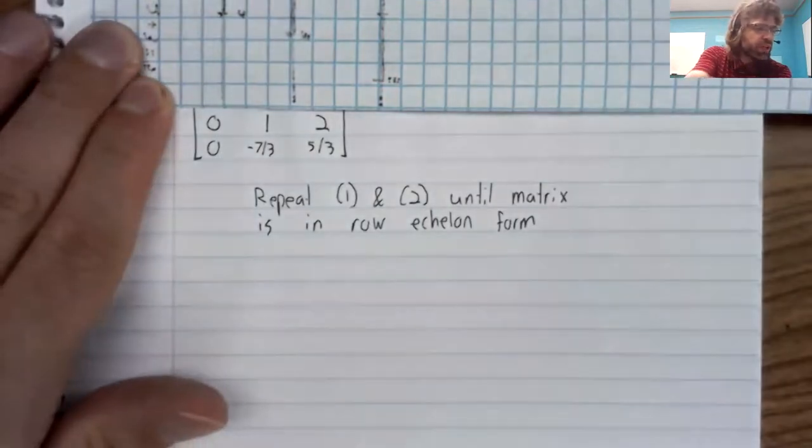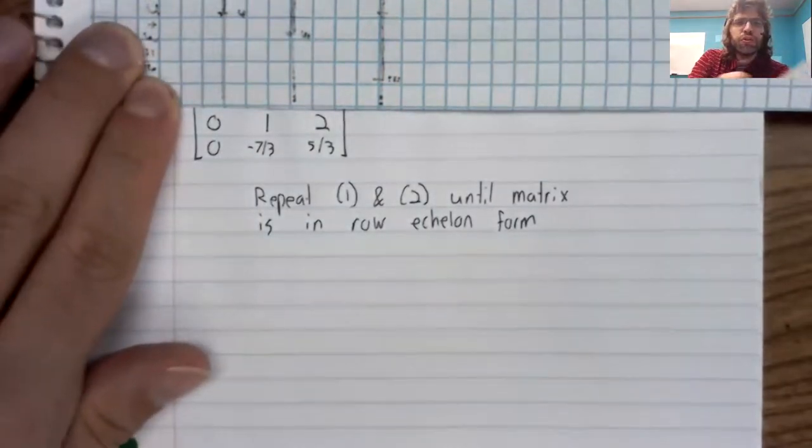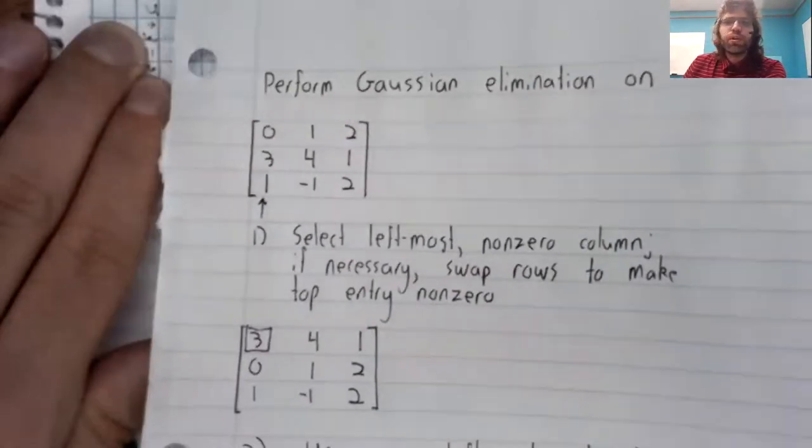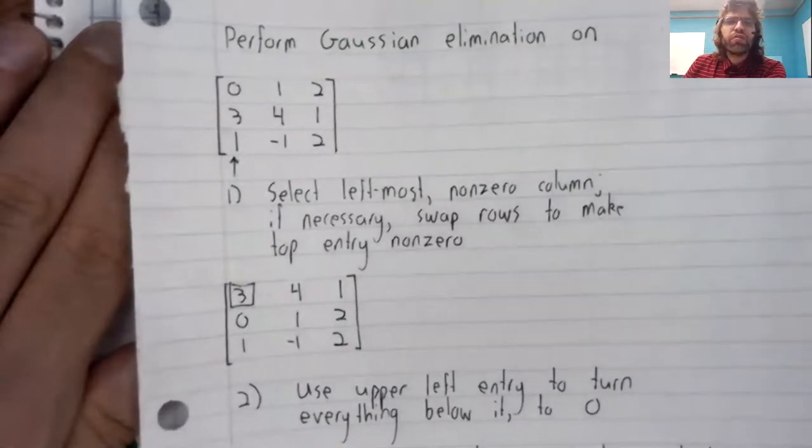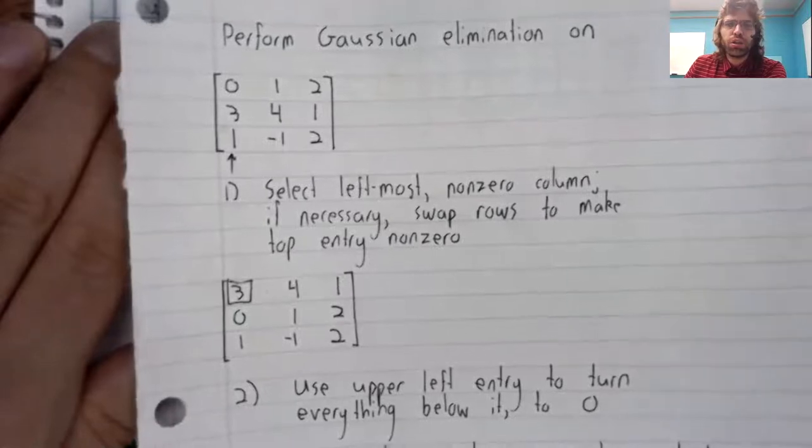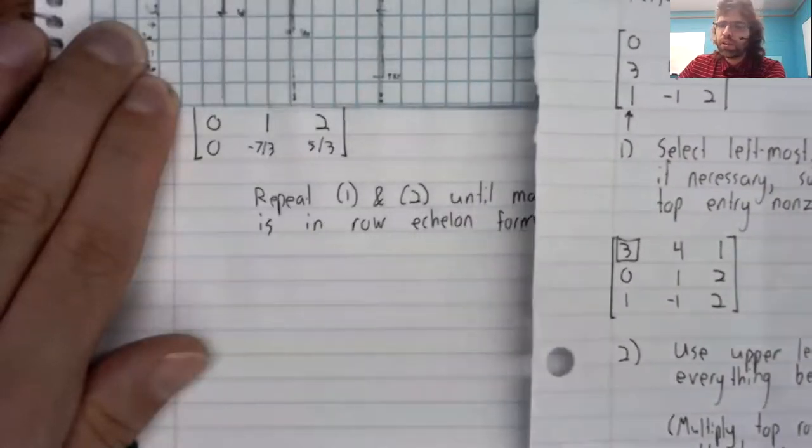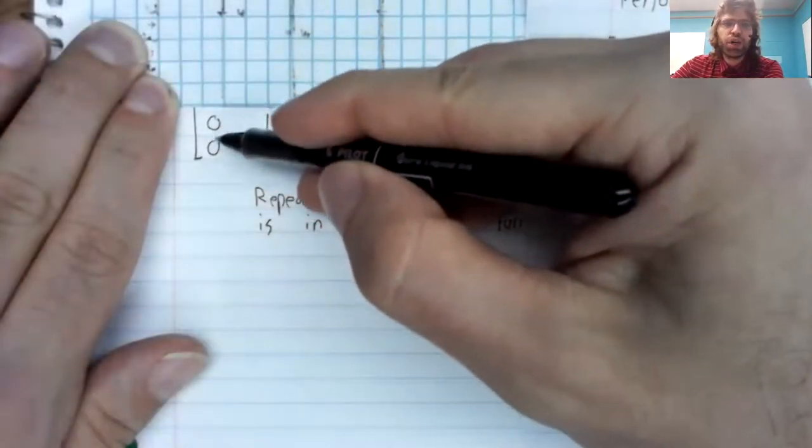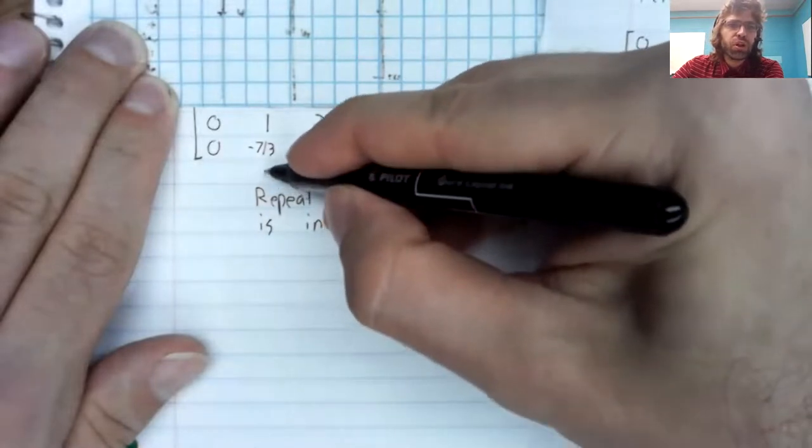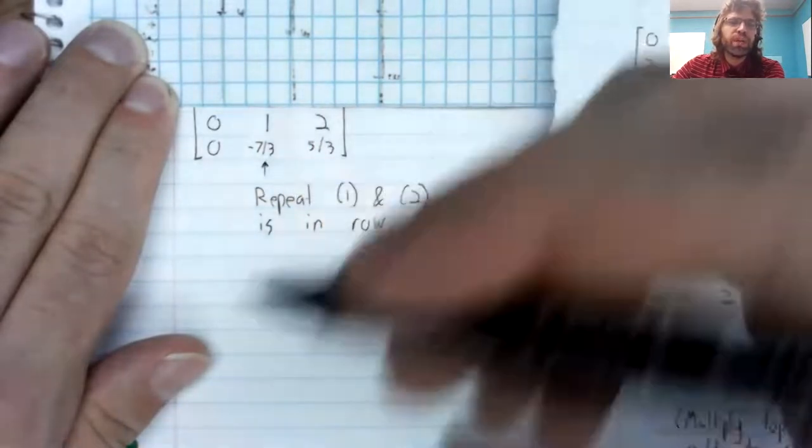Once everything below this three has turned to zero, we are done with the first row. So let's just cover that up. And what should we do now? We should select the leftmost non-zero column. This is always zero, so the leftmost non-zero column is that.